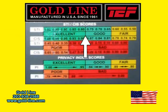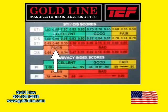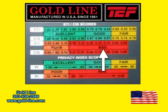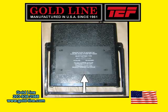When the reading falls in the green, it is an excellent or good score. If the reading falls in the yellow range, the intelligibility is fair. And if the STI or CIS is in the orange range, it is poor. Finally, if the STI or CIS score falls in the red, the intelligibility is bad. We have powered the meter with eight AA alkaline or rechargeable batteries,